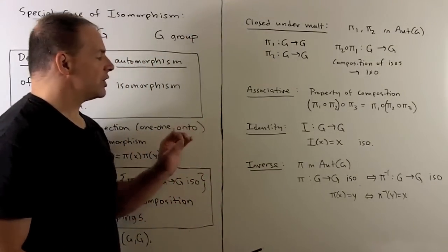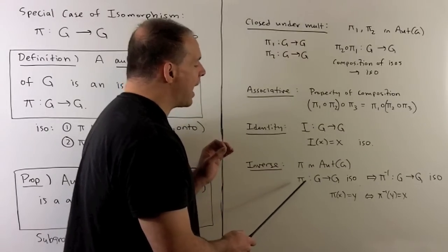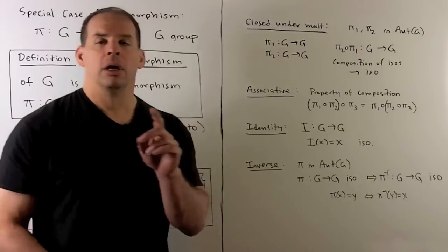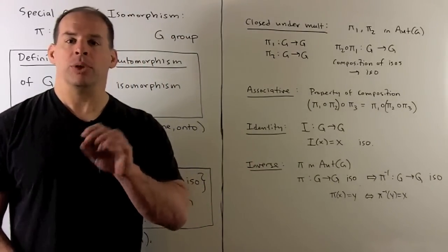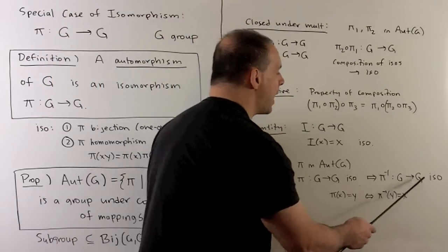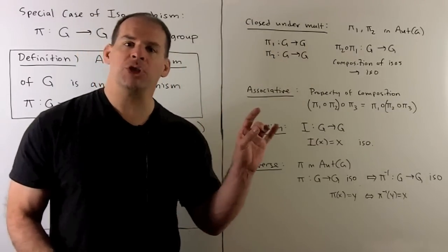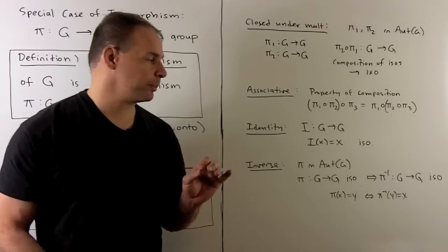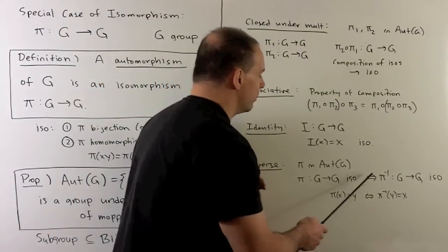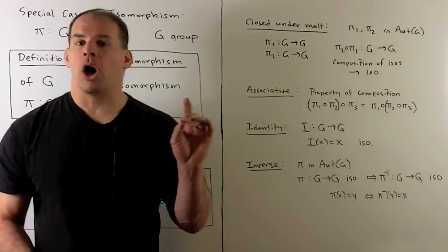Finally, inverses. If we have pi an automorphism in G — an isomorphism pi going from G to itself — because we have a bijection, we can consider the inverse map. We saw last time that this inverse map is automatically a bijection, and we also showed it's a homomorphism. So pi inverse is an automorphism, which means Aut(G) is a group.